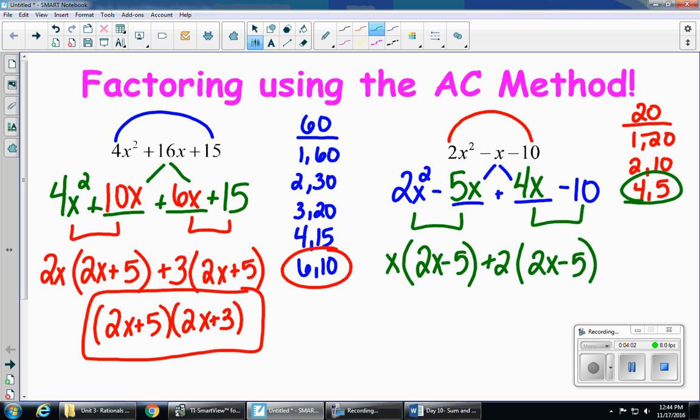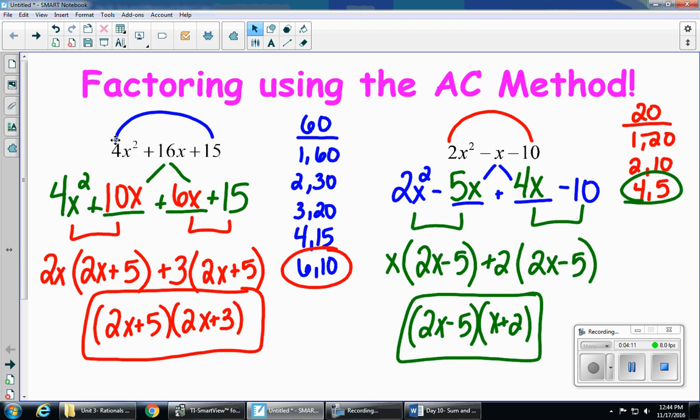So once again, my parentheses match, so I'm going to write that down. 2x minus 5 is one of my factors, and then the other factor is x plus 2. And there you go.